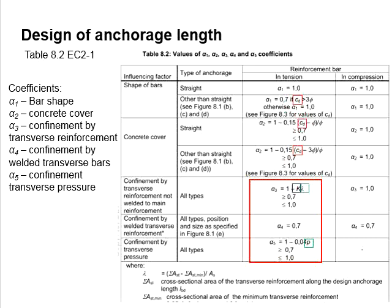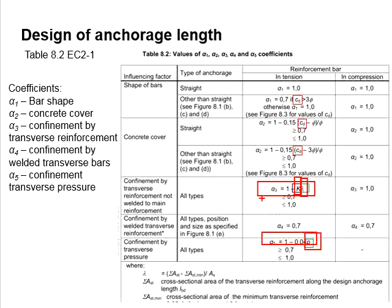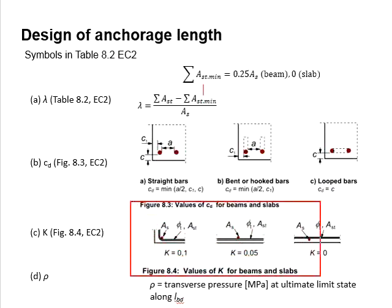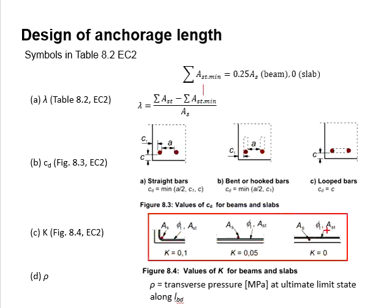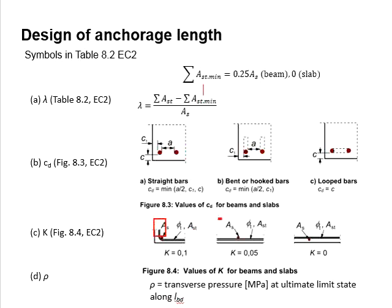Alpha 3 to alpha 5 refer to the influence factors due to different kinds of confinement conditions. The coefficients can be in the form of a constant value of 0.7, or expressed in terms of factors k, lambda, and rho. The factor k represents the effect of the transverse reinforcement. As represents the area of a single anchored bar with the maximum bar diameter, and As,t represents the cross-sectional area of the transverse reinforcement bar for the design anchorage bar.